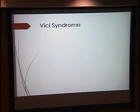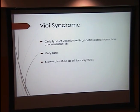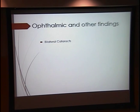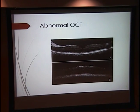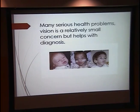The last type is Vici syndrome, recently classified in January of this year. It's the only form of albinism found on chromosome 18 and is very rare. Ophthalmic findings include bilateral cataracts, mild fundus hypopigmentation, and bilateral optic nerve atrophy. Systemic findings include agenesis of the corpus callosum, cardiomyopathy, and immune defects. An abnormal OCT shows lack of a foveal pit and overlying nerve fiber layer. Vision is one of the least of their concerns, but it helps with diagnosis.